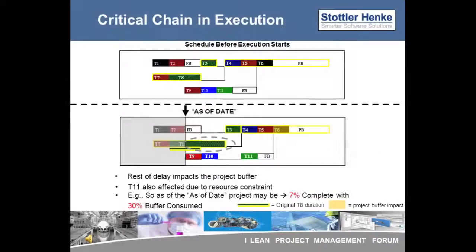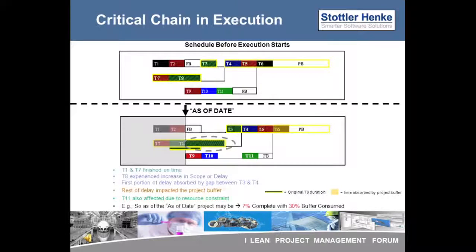Let us review: T1 and T7 finished on time. T8's duration was longer than its planned aggressive duration. The first portion of T8's delay was absorbed by the gap between T3 and T4, and the rest of the delay impacted the project buffer. T11 was also affected due to the resource constraint. Current project status: 7% complete with 30% buffer consumed. Note that many complicated interactions can be occurring, but the project manager just needs to monitor buffer impacts, which is much simpler.